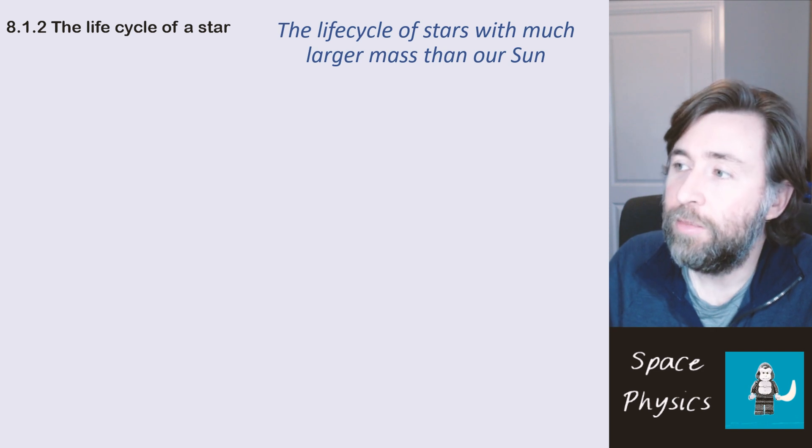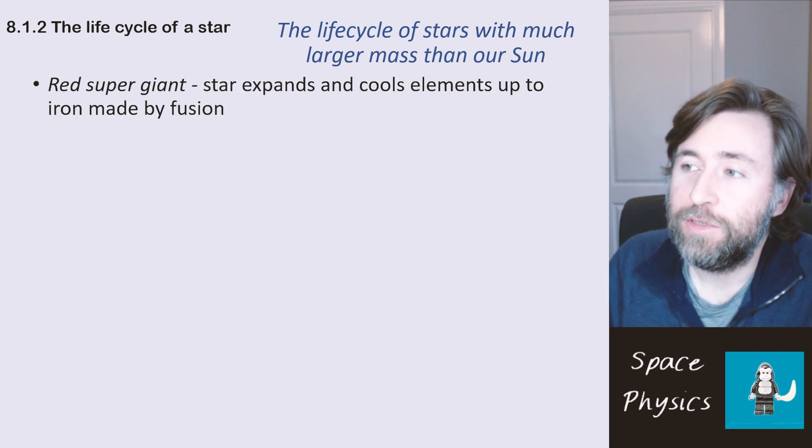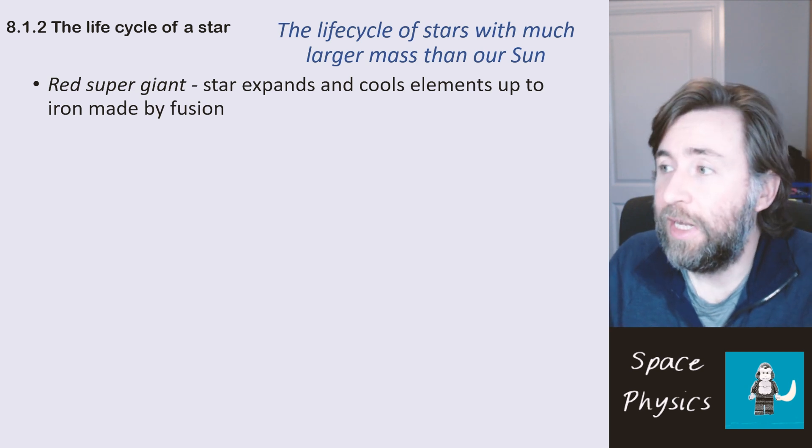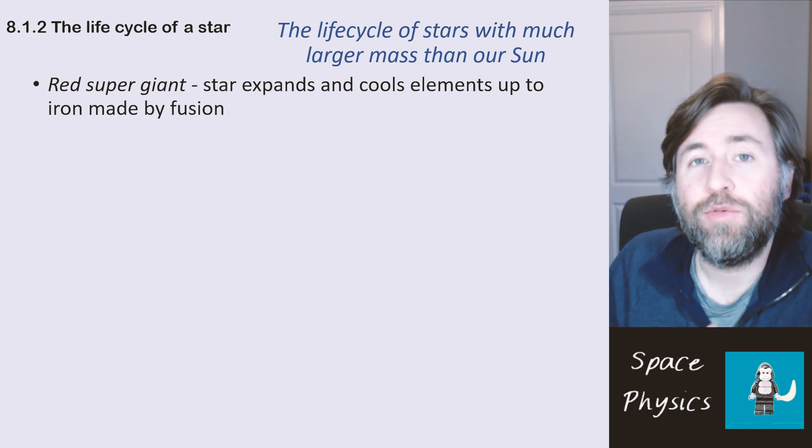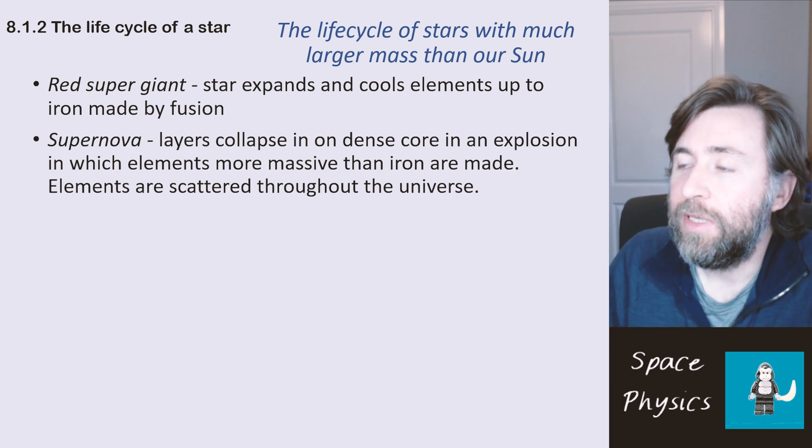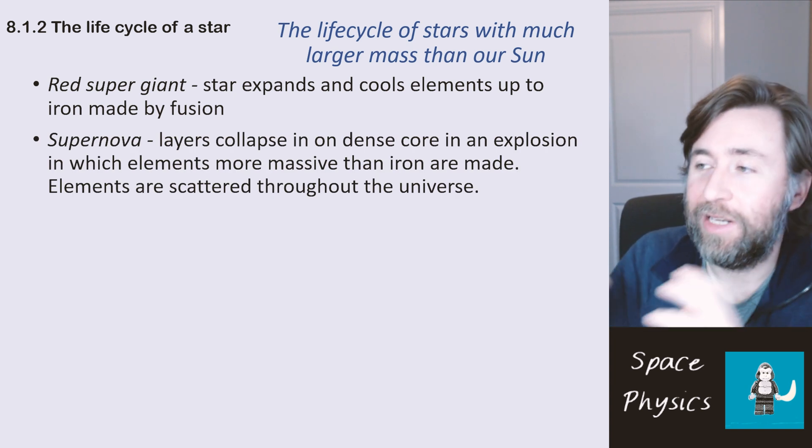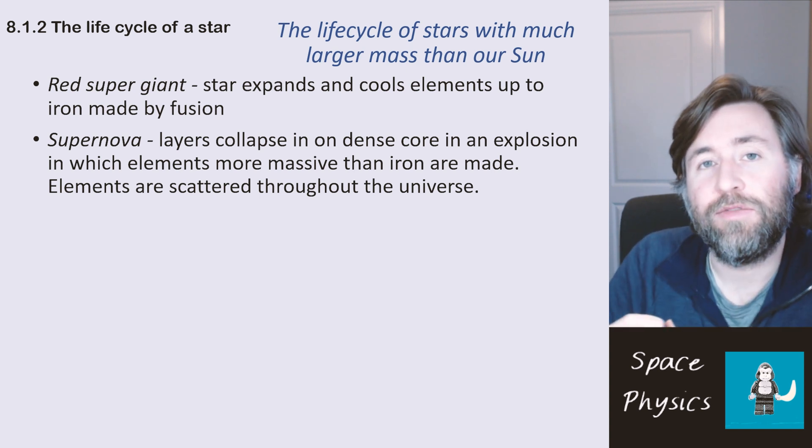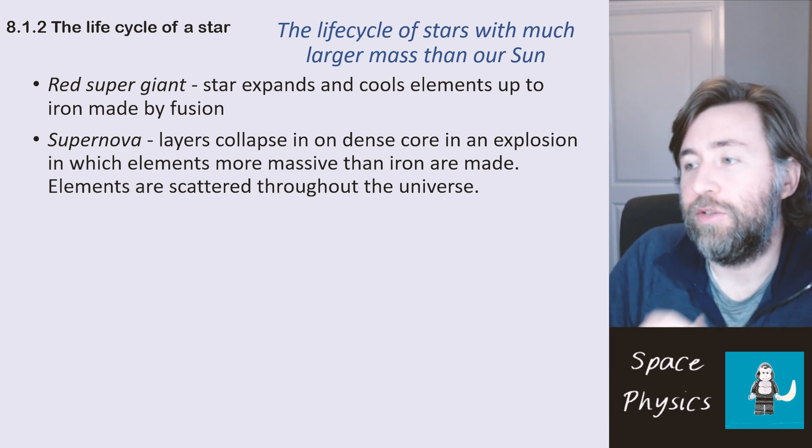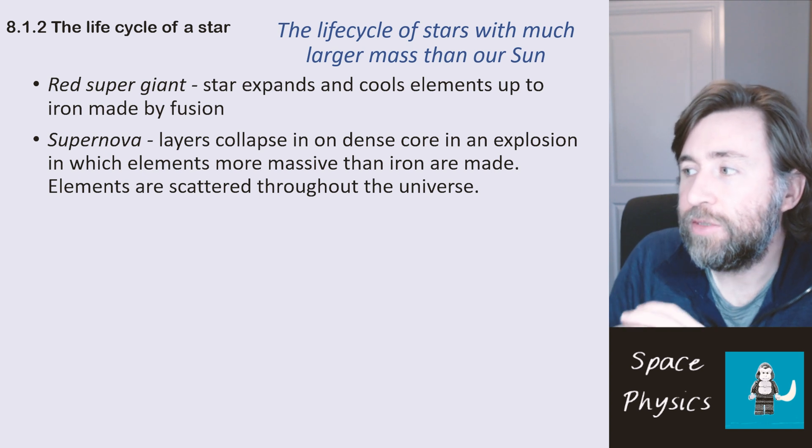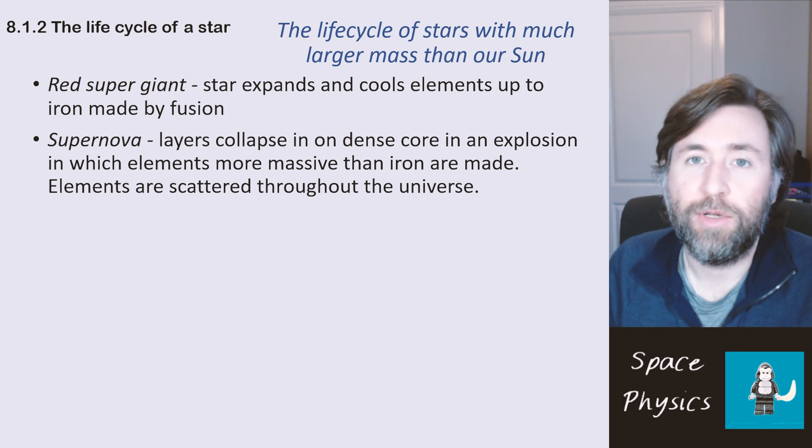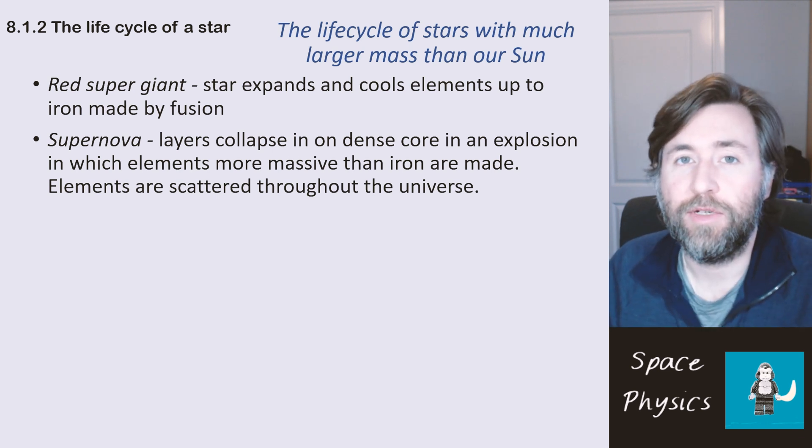The life cycle of a star with much larger mass than our sun goes into a red supergiant after its main sequence. The star expands and cools. And all of the elements again up to iron are made by nuclear fusion. In the supernova the outer layers collapse in on the dense iron core. And that bounce effect, that effect of them bouncing off the core creates the explosion. And because of that there's excess energy to make elements which are more massive than iron. In that explosion the elements are scattered throughout the universe.